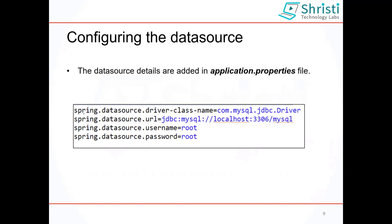The DataSource configuration properties are not arbitrary names you define yourself — they are predefined. Similar to how with @Value annotation you use 'employee.name' or 'employee.city' when the domain model is Employee, the DataSource class has predefined instance variables for driver class name, URL, username, and password, annotated with @Value. So you must use the exact predefined property names in application.properties. For MySQL, you provide the MySQL driver class name, URL, username, and password using those specific keys.